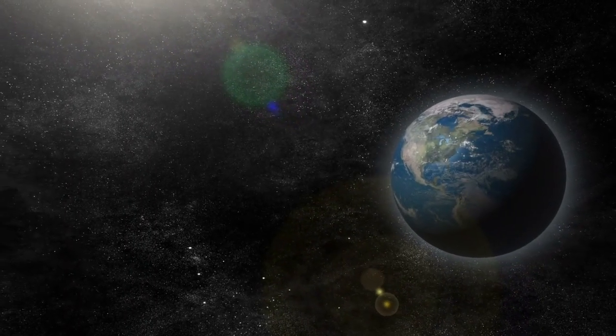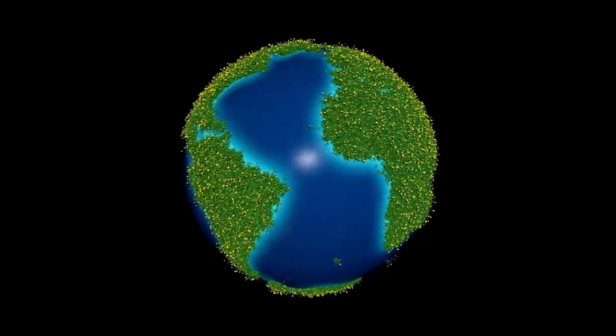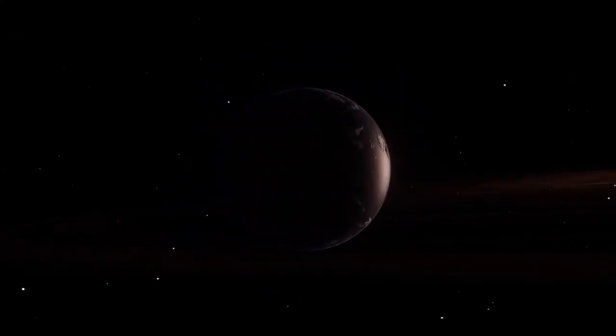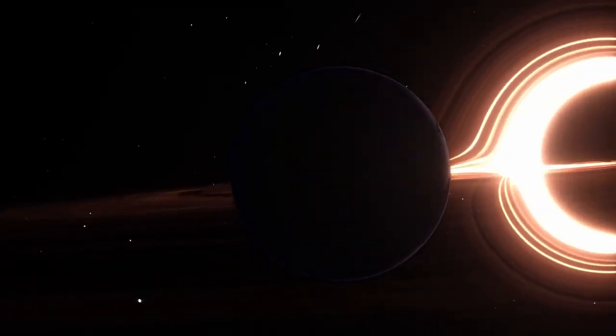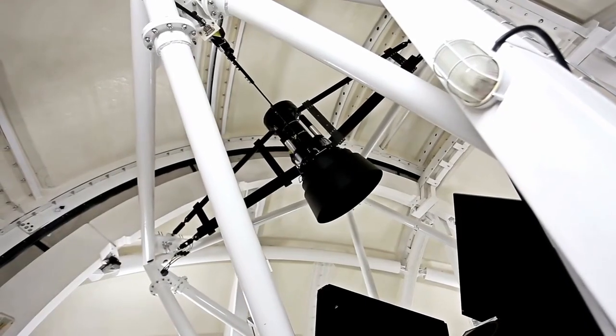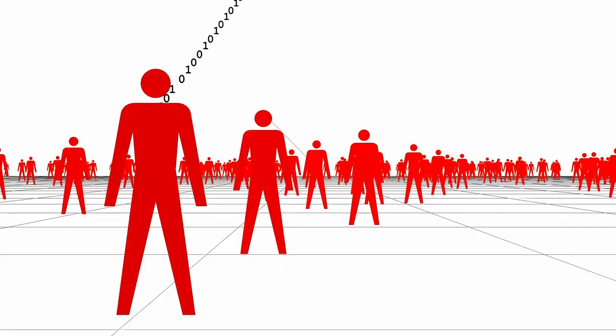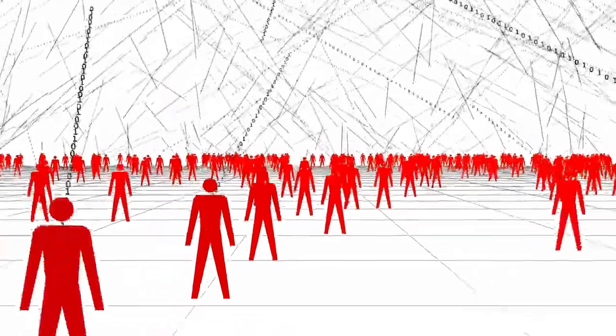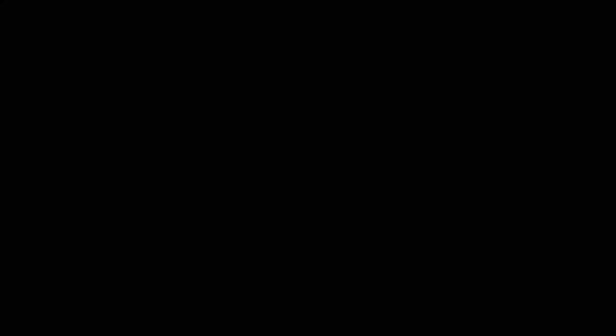For years, this small rocky world existed in the minds of scientists as a distant possibility, detected only through faint signals, tiny wobbles in starlight and subtle dimming events. Now, for the first time in human history, we have a direct, incredibly detailed image of this alien planet. Captured through layers of thermal and infrared imaging, the image offers more than just a glimpse—it marks the beginning of a new era in exoplanetary exploration.